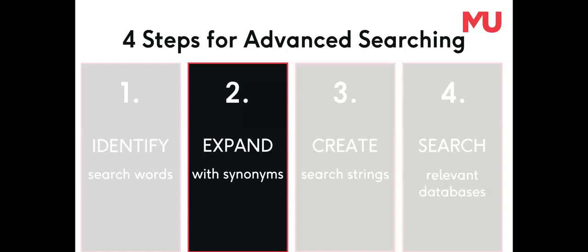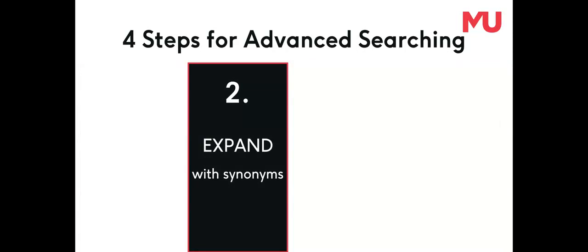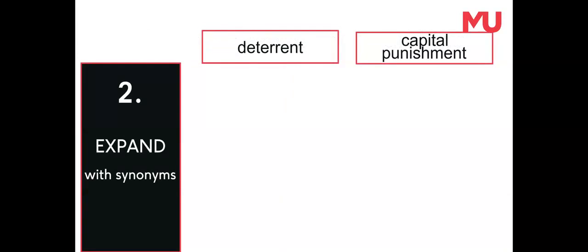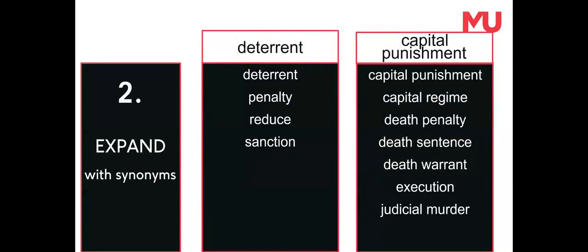Step two involves expanding the list of key search words to include synonyms. Databases are literal — they only use the words that are given to search. To conduct a comprehensive search, include synonyms and spelling variations for each search word in the search words list.